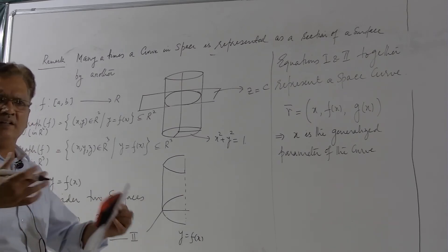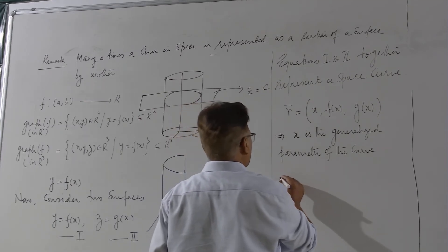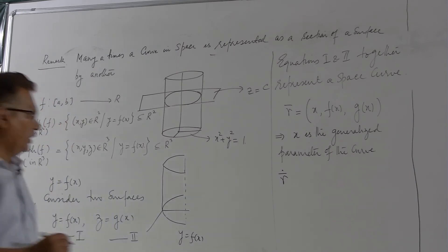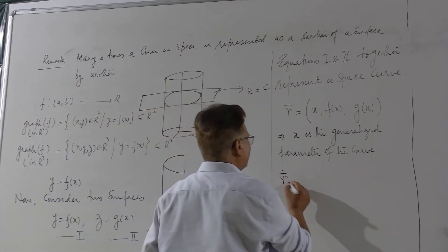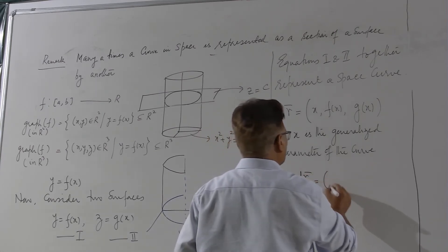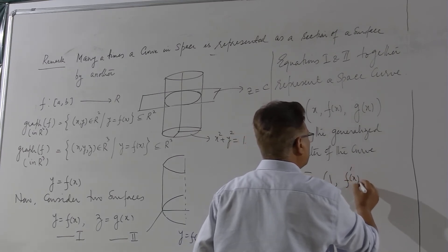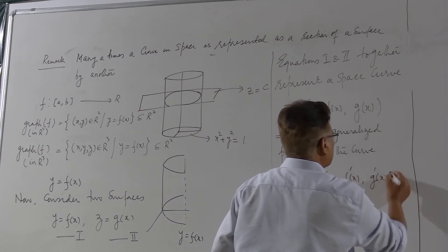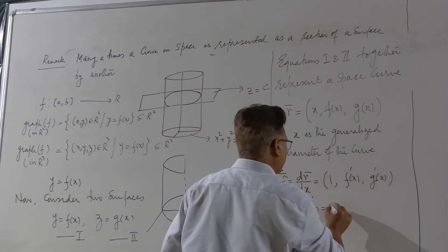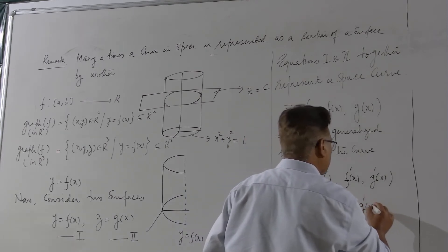Now you can find out all the things: the tangent vector, the natural parameter, all kinds of things you can find out. So I will find out r dot to see the tangent vector of the curve. So r dot means dr over dx because here the parameter is x. So it is (1, f', g').